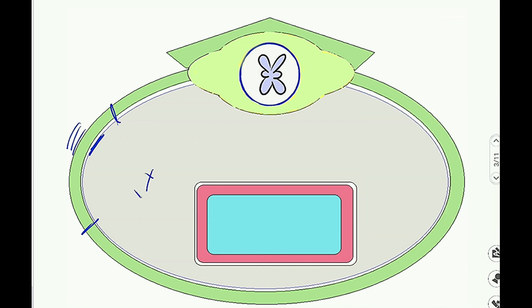After the parietal layer of the pleura we have the pleural cavity. The viscera here — for example, the lungs — are externally lined by the visceral layer of the pleura. Between the parietal layer of the pleura and the visceral layer of the pleura, we have the pleural cavity.